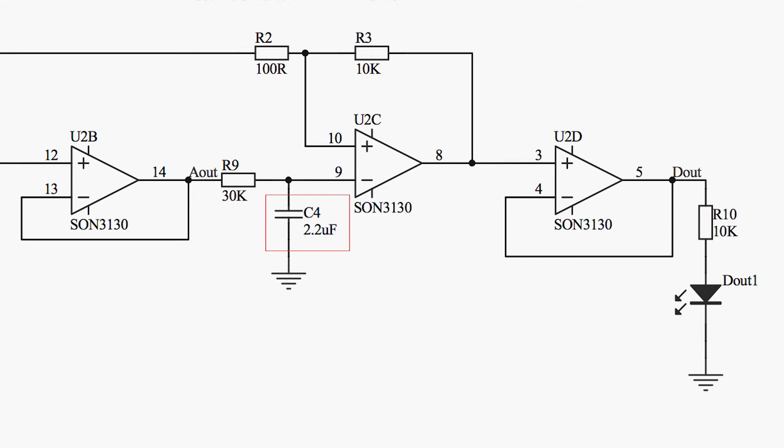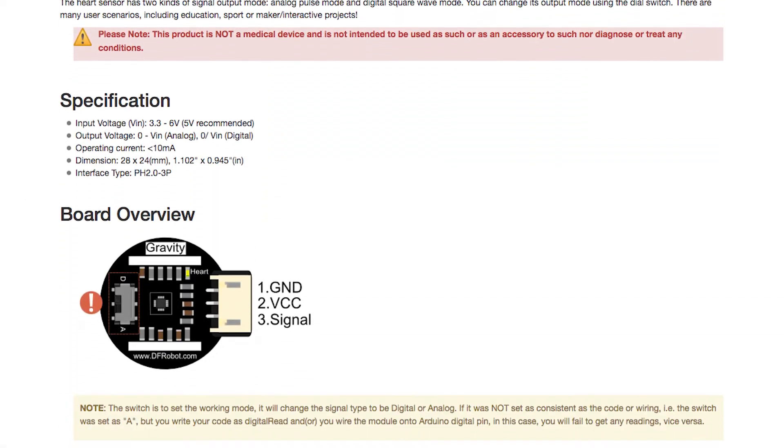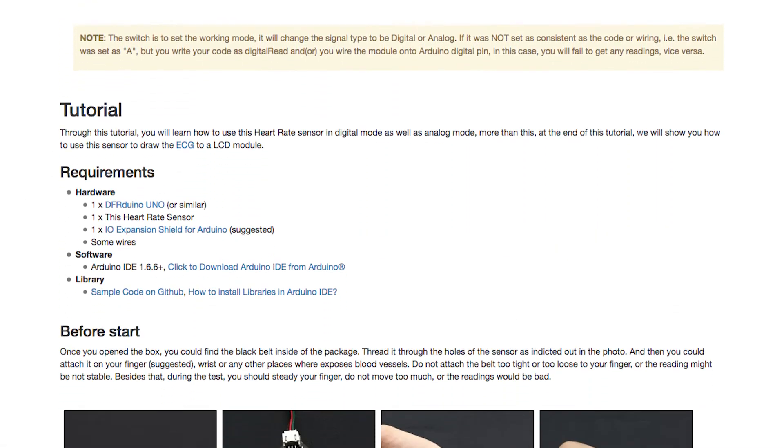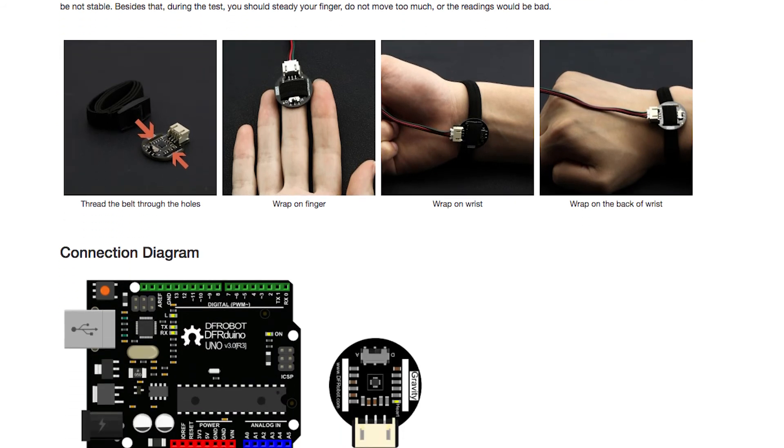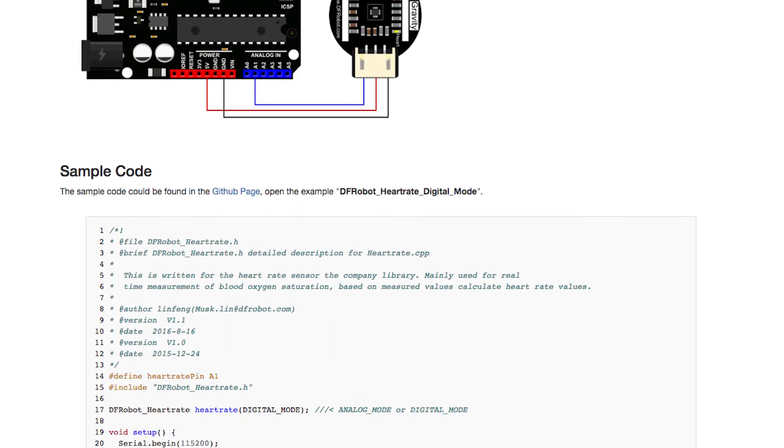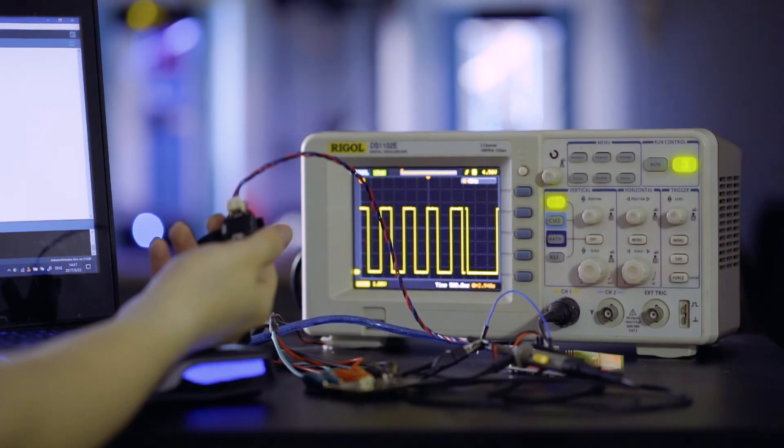If you are interested in going deeper, the schematic diagrams and other specifications can be found here via wiki page. Anyways, based on the square wave, we can calculate the heart rate by counting how many times the voltage shifts from low to high, or also high to low, in a certain time interval.